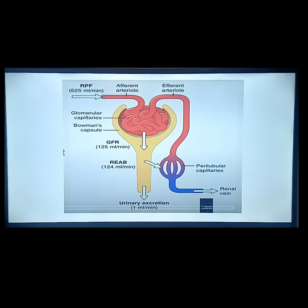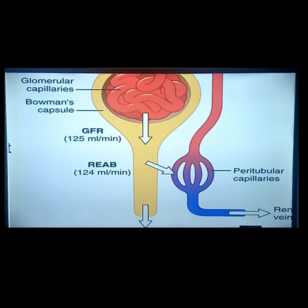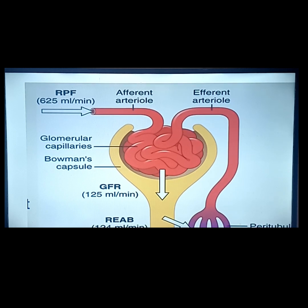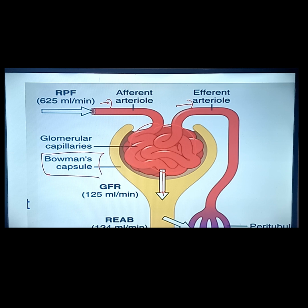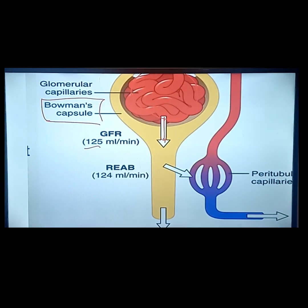Your kidney produces urine. Urine production starts from the arterioles. From the afferent arterioles going inside the kidney, specifically in your glomerulus. Blood enters through the afferent arterioles and exits towards the efferent arterioles. After filtration, whatever fluids and electrolytes are filtered will go into your Bowman's capsule. The Bowman's capsule encapsulates the glomerulus and receives the filtered fluid and electrolytes. The filtration rate is 125 ml per minute.